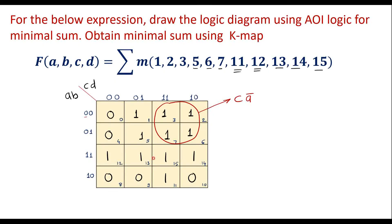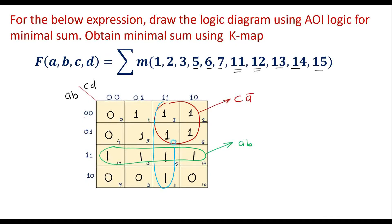Now here we can see that these four ones can form another quad. The value of this quad is A and B, that is AB. Now we can see one more group of four ones that form another quad — their common values correspond to C and D, giving the term CD.